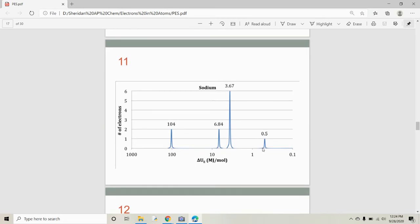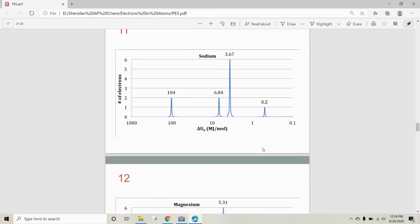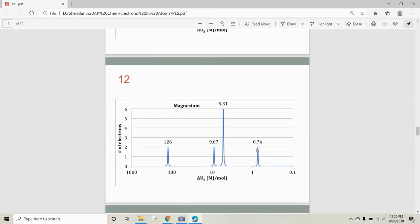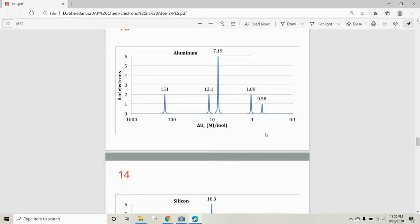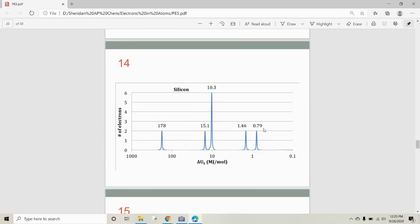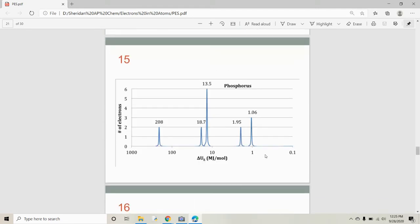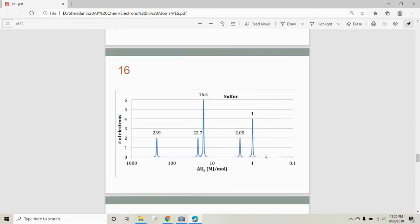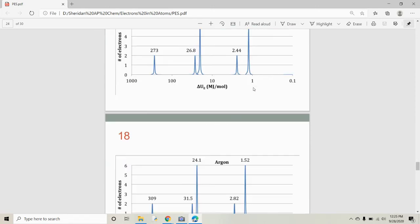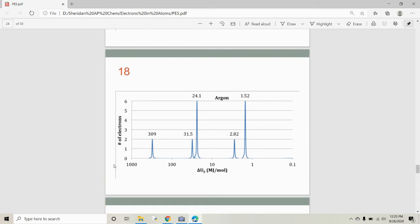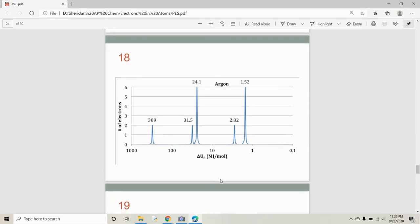Here's sodium with that 3s1 popping in. Everything, again, is shifting left. Magnesium, 3s2. Aluminum, 3p1. Silicon, 3p2. Phosphorus, 3p3. Sulfur, 3p4. Chlorine, 3p5. And argon, 3p6. And once again, there go those peaks moving closer and closer to that nucleus because we're getting more protons and making it stronger.